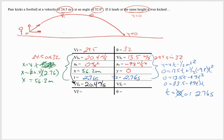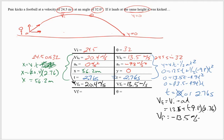In the Y direction, though, the acceleration is negative 9.8. So I would have VF equals VI plus AT. I know my initial velocity is 13.5, my acceleration is negative 9.8, and it accelerated for 2.76 seconds. When I plug all that in, I get a final velocity of negative 13.5 meters per second.